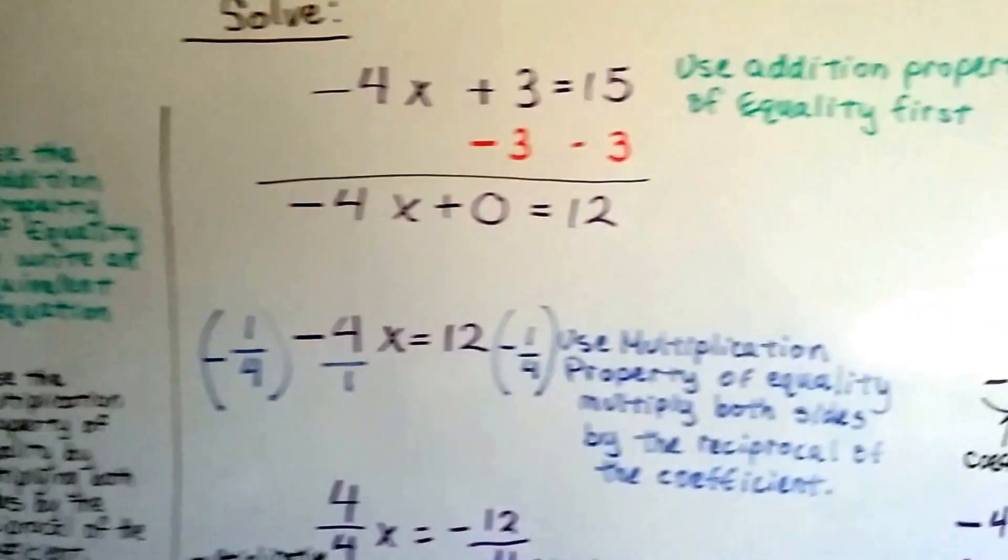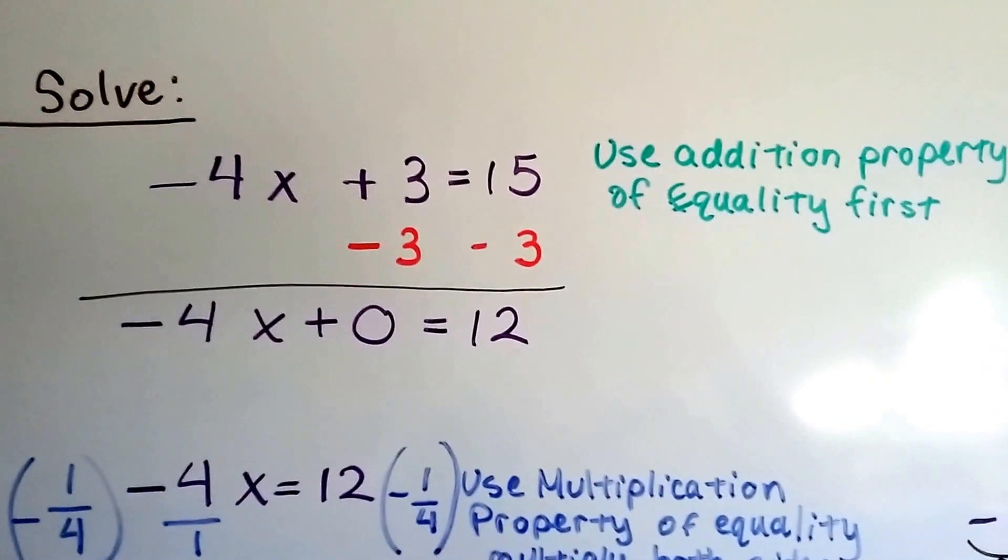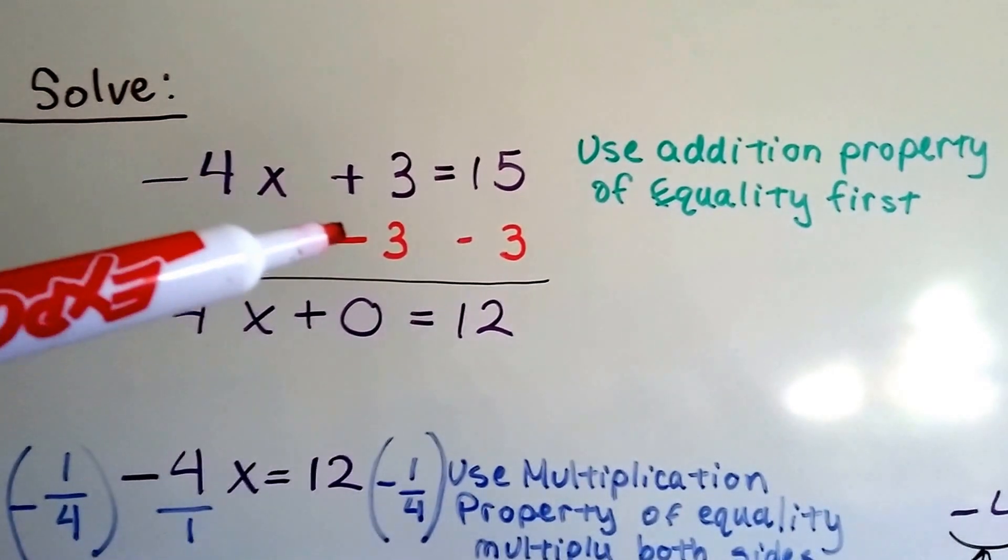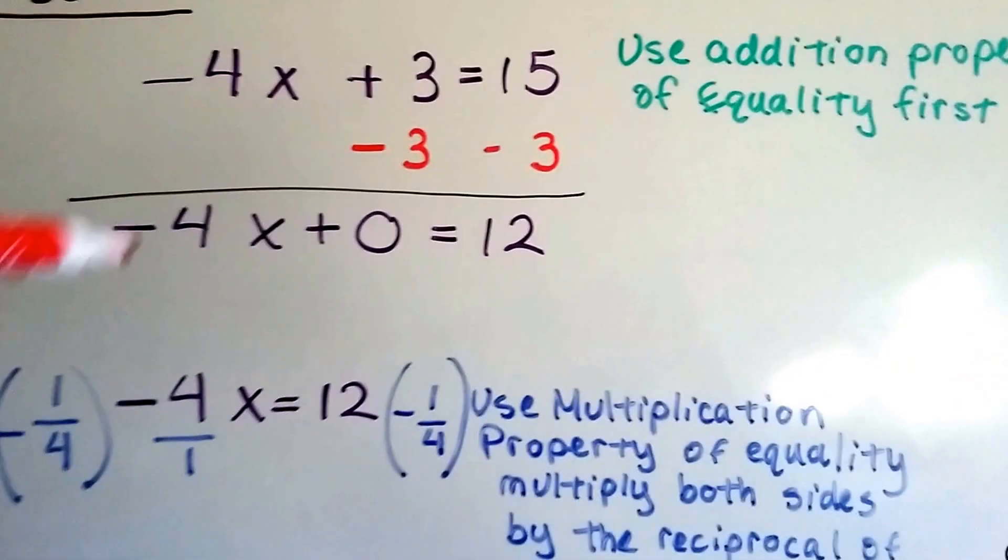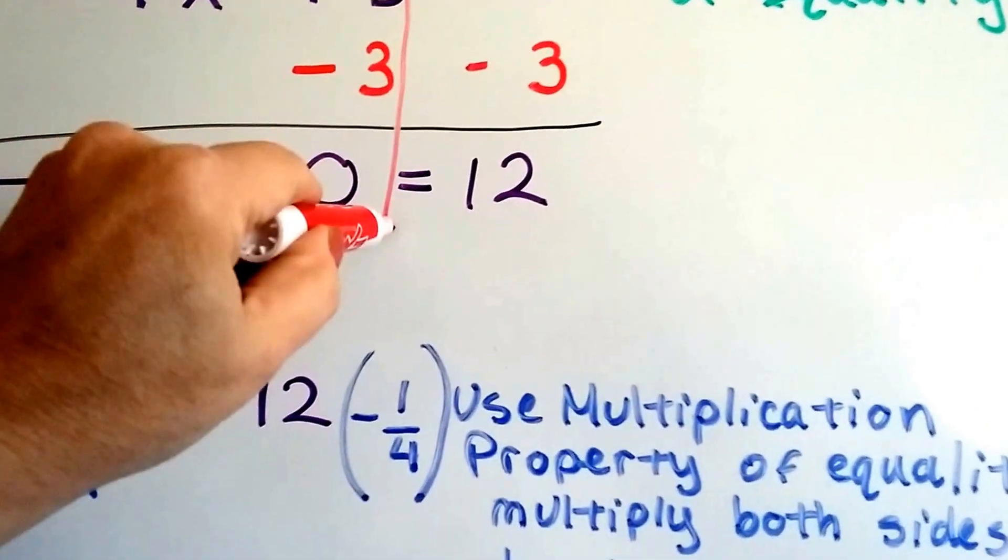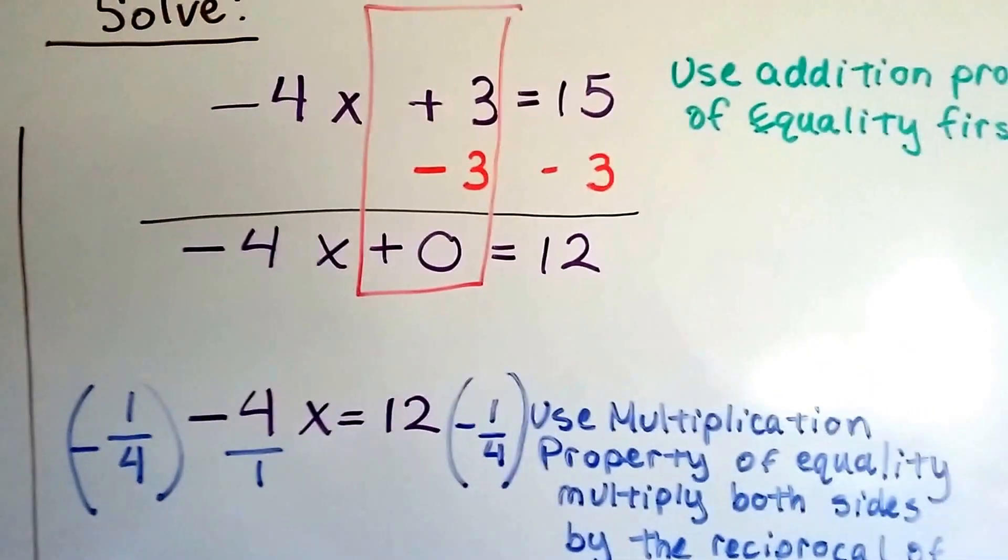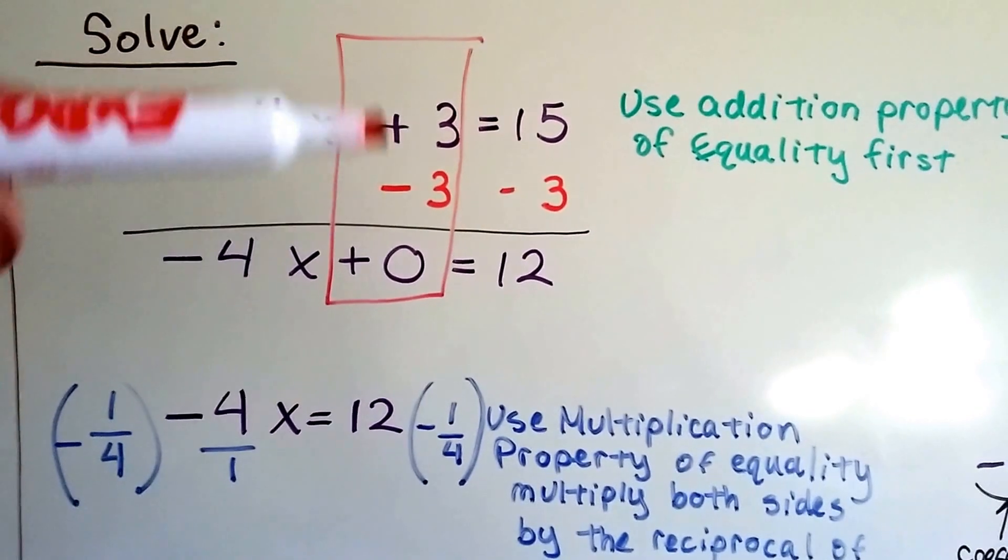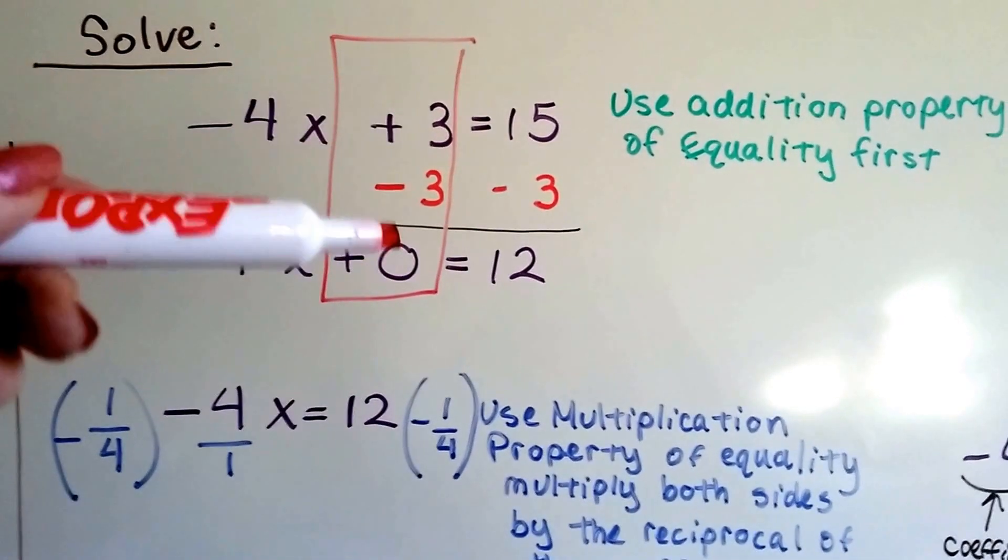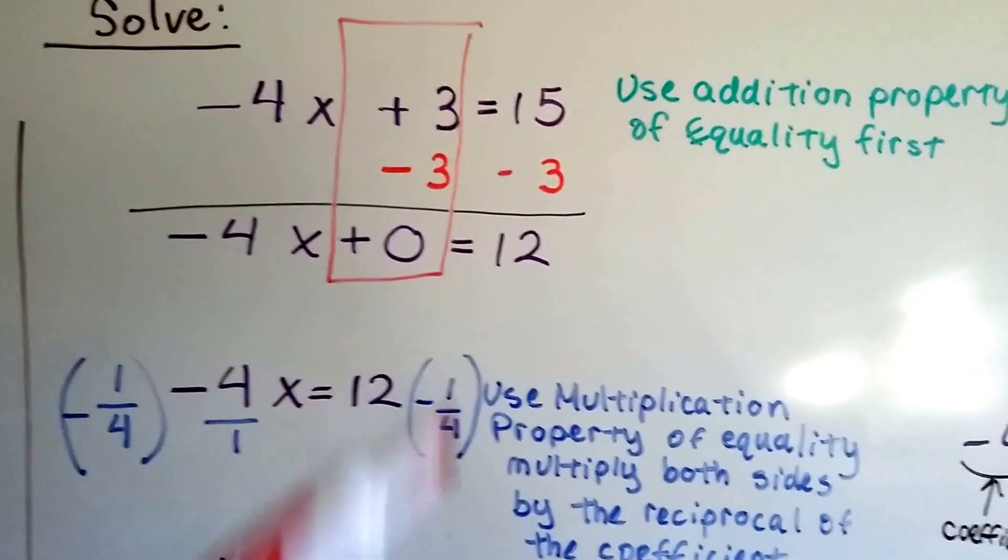Now, what happens when we have a negative coefficient? Same thing. We add a negative 3 to this positive 3, using the addition property of equality, so that this portion of the equation is going to be a 0. It's a 0 pair. Plus 3 minus 3 makes a 0 pair. It's a pair of numbers together that make a 0. 15 take away 3 is 12.